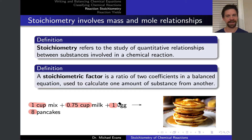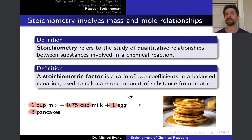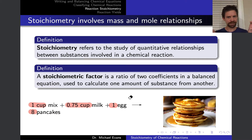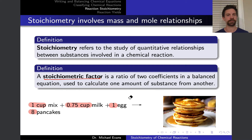The example I'm showing on this slide actually has nothing to do with chemistry, but looks more like a recipe for making pancakes: one cup mix plus 0.75 cups of milk plus one egg gives eight pancakes. This is a perfect analogy to a balanced chemical equation. We've got the ingredients, we've got the final product, and we've got the amounts in which the ingredients combine and the amount of pancake product that's formed as a result of this. What we can do with this recipe — this balanced chemical equation — is form ratios that we call stoichiometric factors.